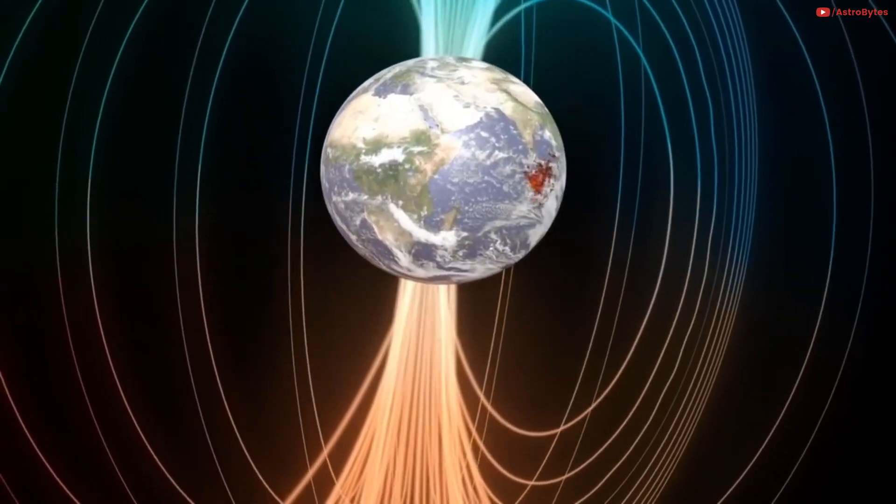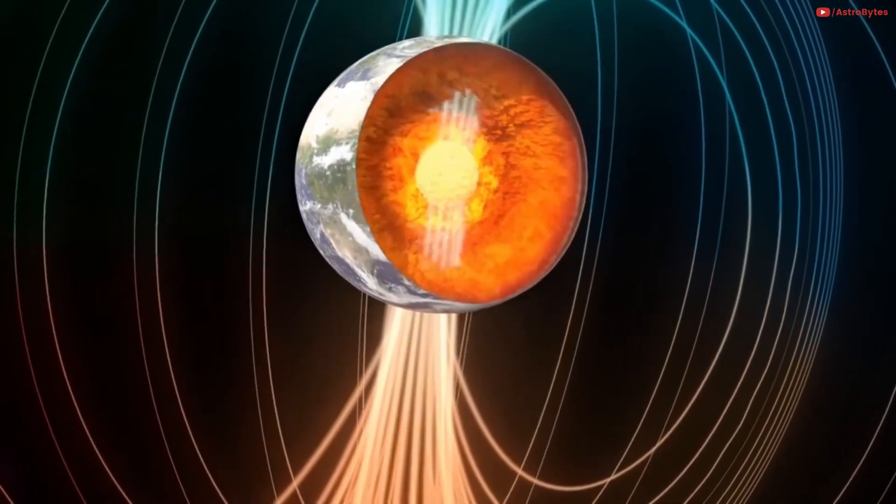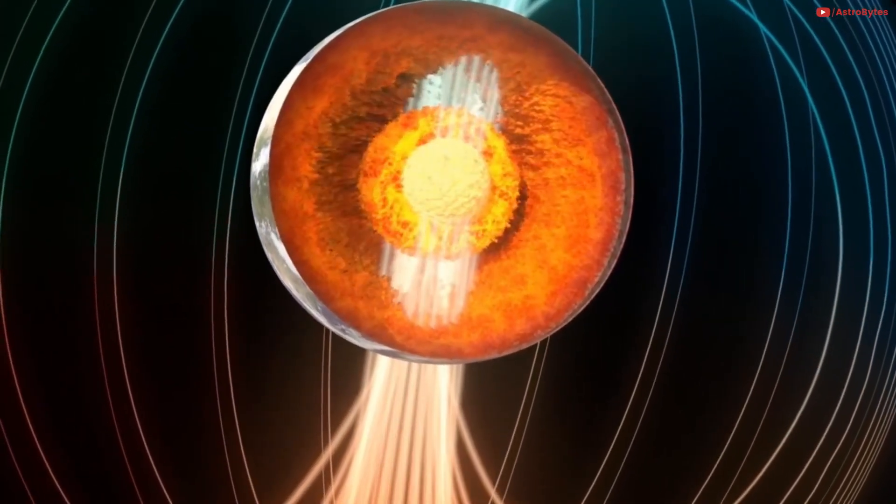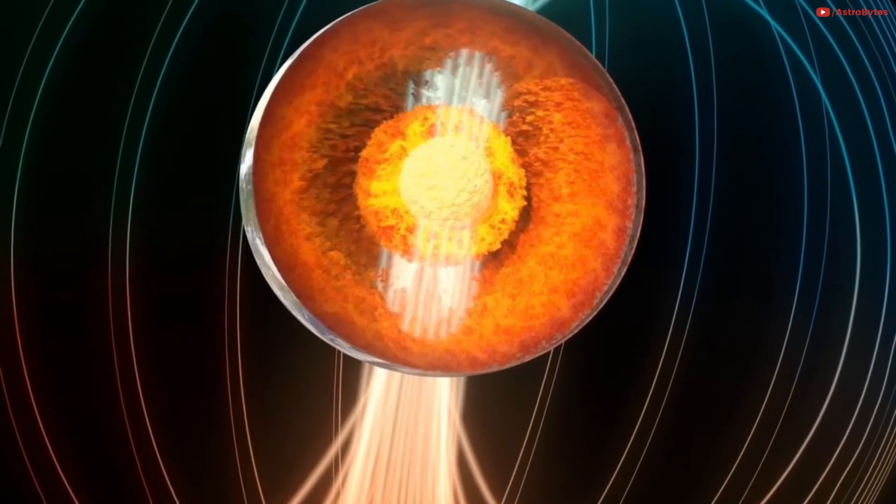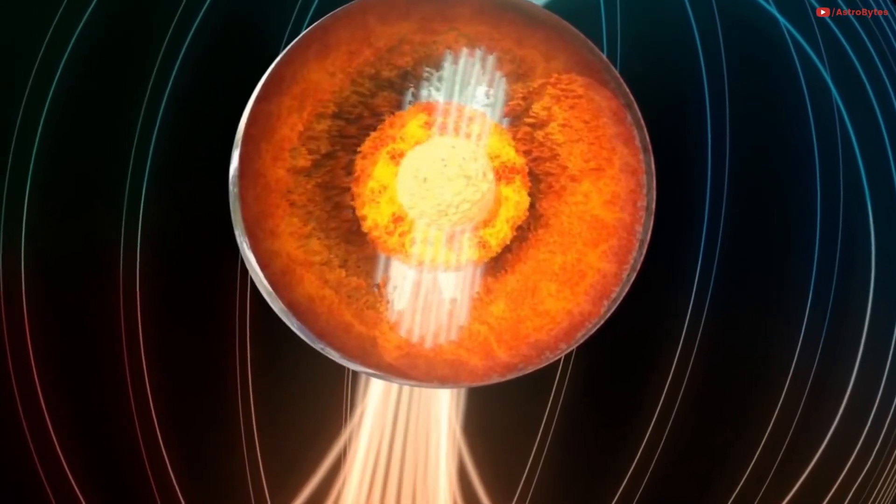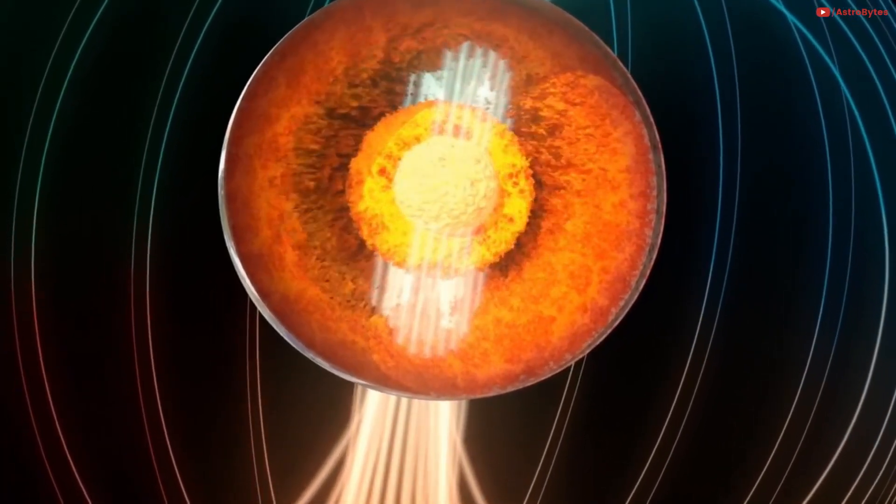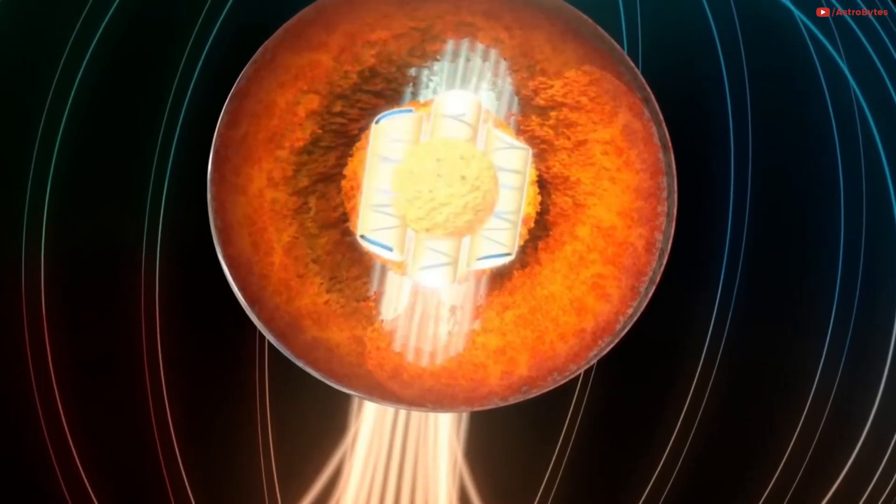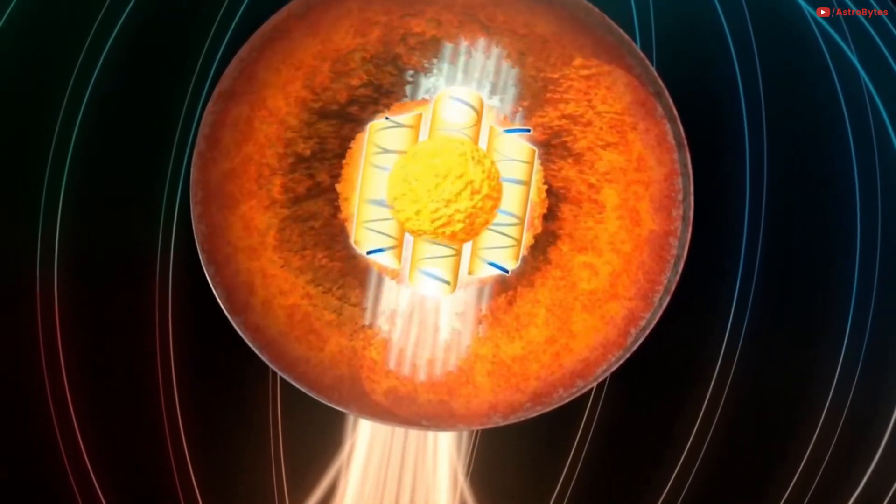Earth's molten core might cool. Earth is surrounded by a protective magnetic shield called the magnetosphere. The field is generated by Earth's rotation, which swirls a thick shell of liquid iron and nickel around a solid ball of metal, creating a giant electric dynamo.